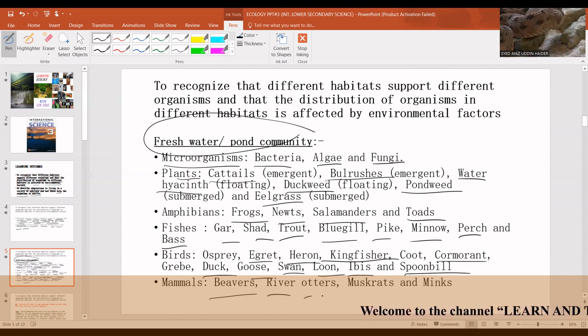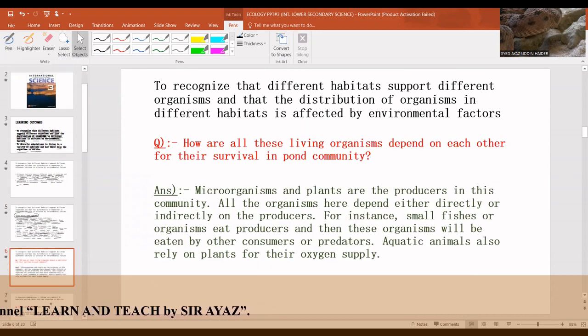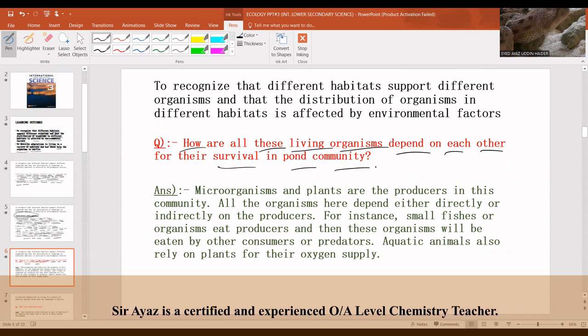Mammals like beavers, river otters, muskrats, and minks. How are all these living organisms dependent on each other for their survival in a pond community?